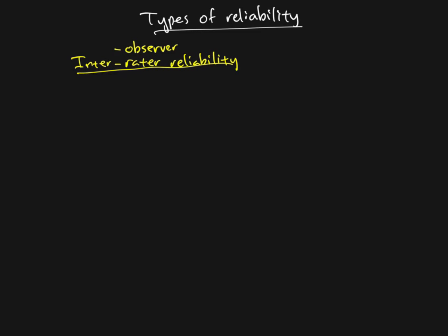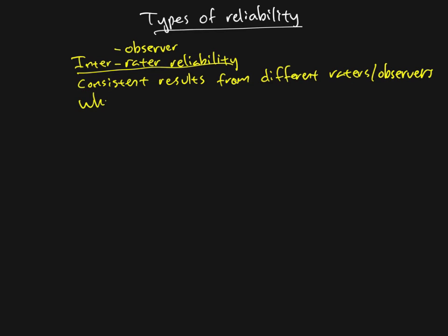The definition: inter-rater reliability means getting consistent results from different raters or observers who are measuring the same thing. It's quite possible that we ask 10 different people to rate how aggressive the children are and get very different results — some rating aggression very low, others very high. In that case, when we calculate our inter-rater reliability, we'll see a very low consistency among the different observers.